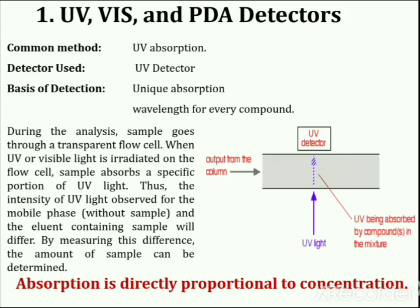PDA detectors detect an entire spectrum simultaneously. UV and visible detectors visualize the obtained result in two dimensions — light intensity and time — but PDA adds the third dimension: wavelength. So with UV visible and PDA detectors, it is convenient to determine the most suitable wavelength without repeating the analysis.